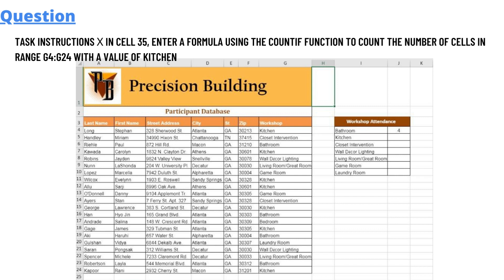Today's question is: in cell J5, enter a formula using the COUNTIF function to count the number of cells in range G4:G24 with the value of kitchen.